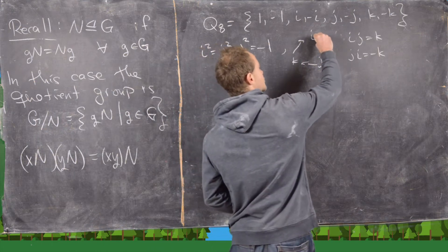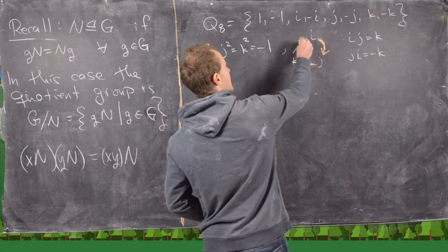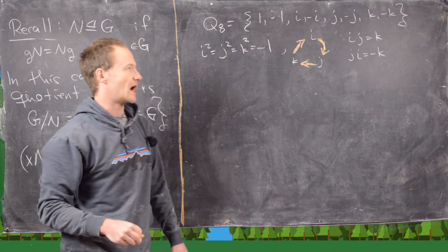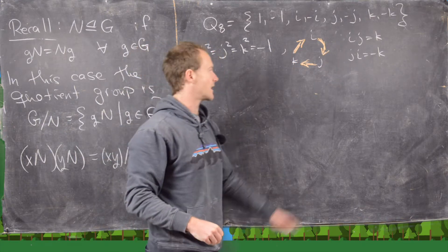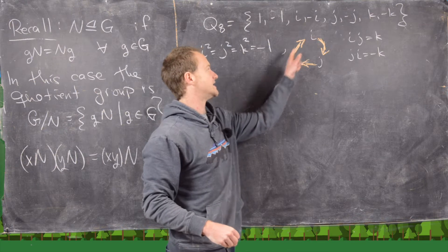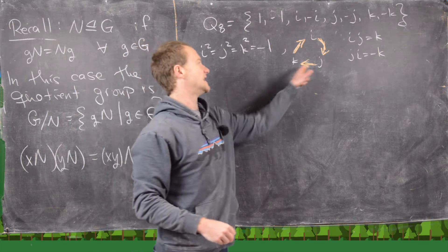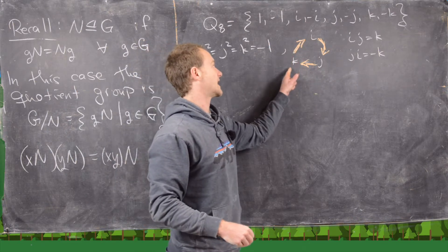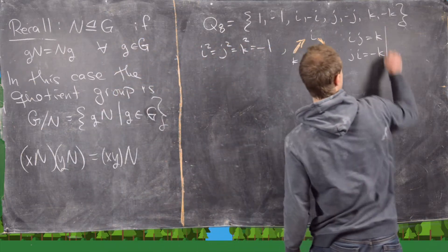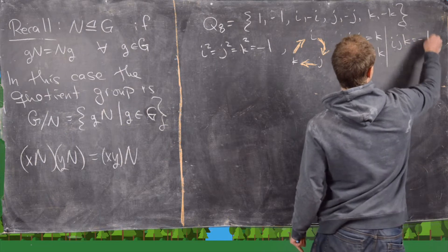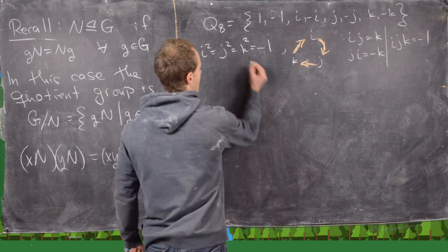We read the multiplication diagram in the clockwise orientation. If we go in the direction of the arrows, we pick up a positive sign — so i·j = k. But j·i = -k because we go opposite the arrows. Similarly, k·i = j, and going backwards gives the negative. You can also check that i·j·k = -1.